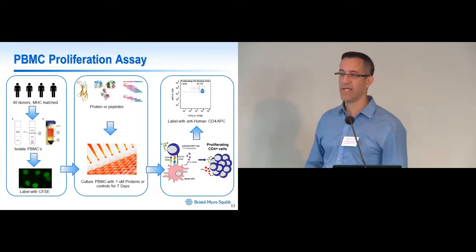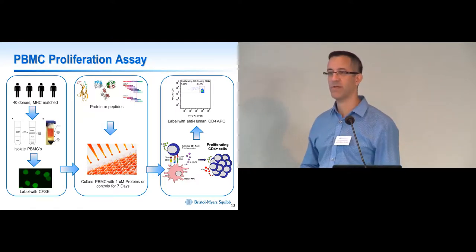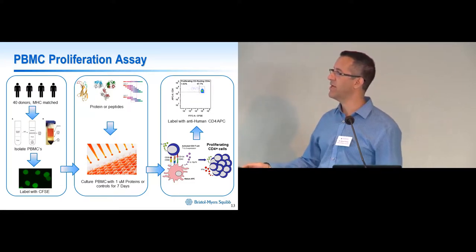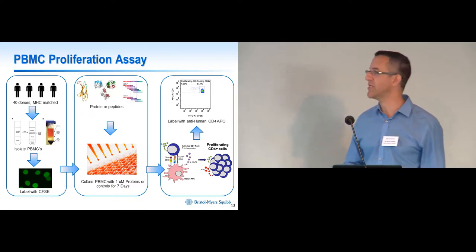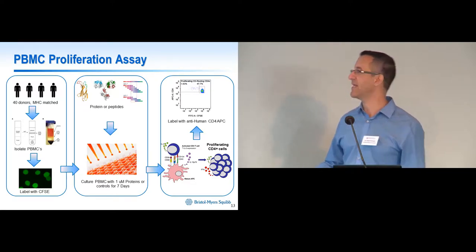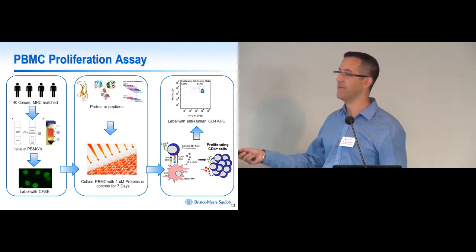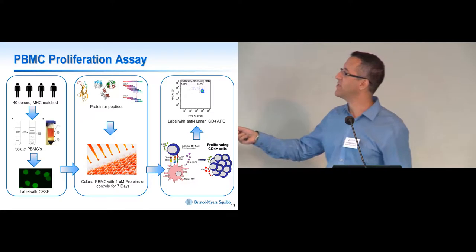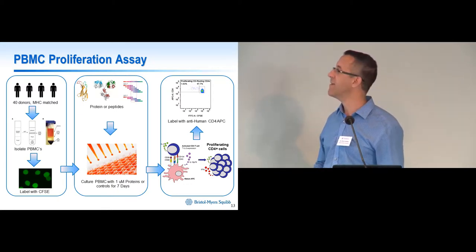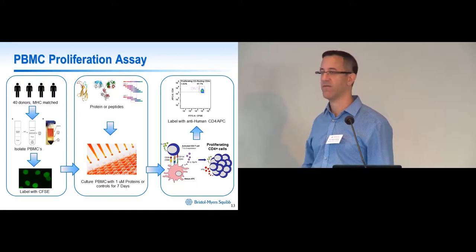This slide shows the assay we use for the bulk of our work, which is a PBMC proliferation assay. We isolate peripheral blood mononuclear cells from various healthy donors and bank them. When ready to run a cohort, we grab 40 of those donors, MHC-matched to class 2 for the world population to get a broad range. We label the PBMCs with CFSC, a fluorescent dye that allows us to track proliferation, and incubate them with proteins of interest and controls for seven days. We then label with anti-human CD4 APC and run flow cytometry to get the percentage of resting cells versus those that have proliferated and lost CFSC staining. The ratio is used to declare whether a protein is positive in each individual donor based on a cutoff of media plus two standard deviations.